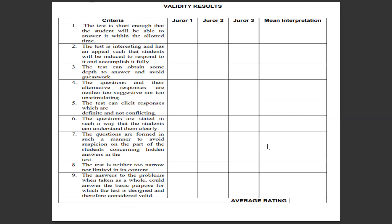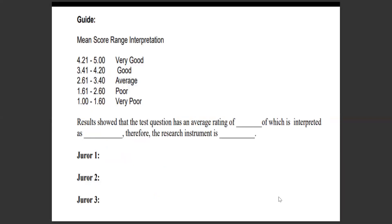After that, you will have your three jurors check your work. Results will be compiled and summarized in a particular table, from which you will get your average rating and decide whether your questionnaire is very good, good, average, poor, or very poor. If you achieve an average score up to very good, then your questionnaire will be good to go. However, if your score ranges from poor to very poor, then you need to revise your questionnaire and consider the suggestions of your jurors.